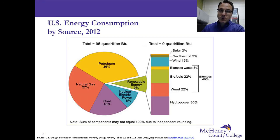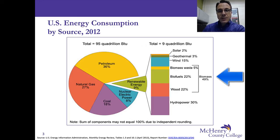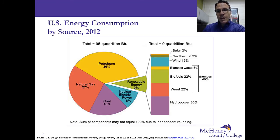This is an enormous chunk of the pie. About 9% was from renewable energy resources. Biomass constituted 49% of that 9%, so by far the largest piece of renewable energy is biomass, and that includes waste, biofuels, and wood. Hydropower comprised 30% of the 9%. And then we have wind, geothermal, and solar energy comprising the rest.